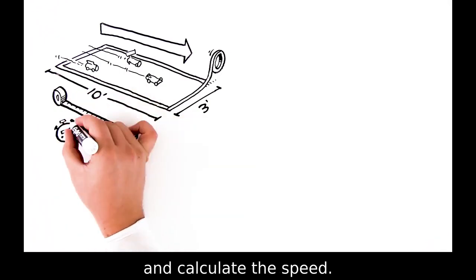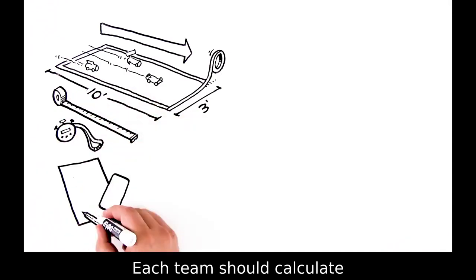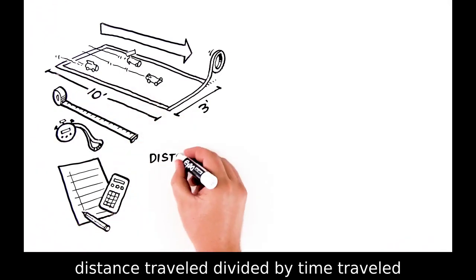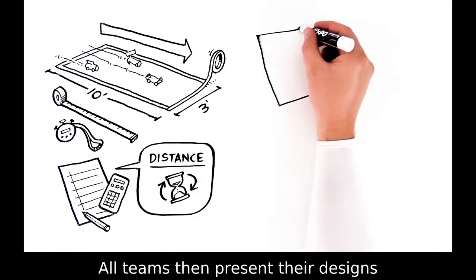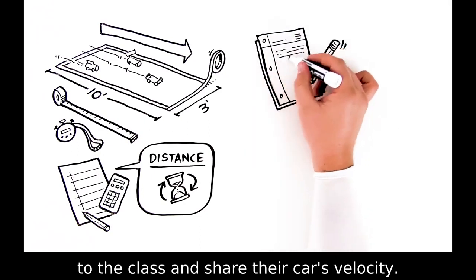Measure the distance and calculate the speed. Each team should calculate their car's velocity: distance traveled divided by time traveled within the track. All teams then present their designs to the class and share their car's velocity.